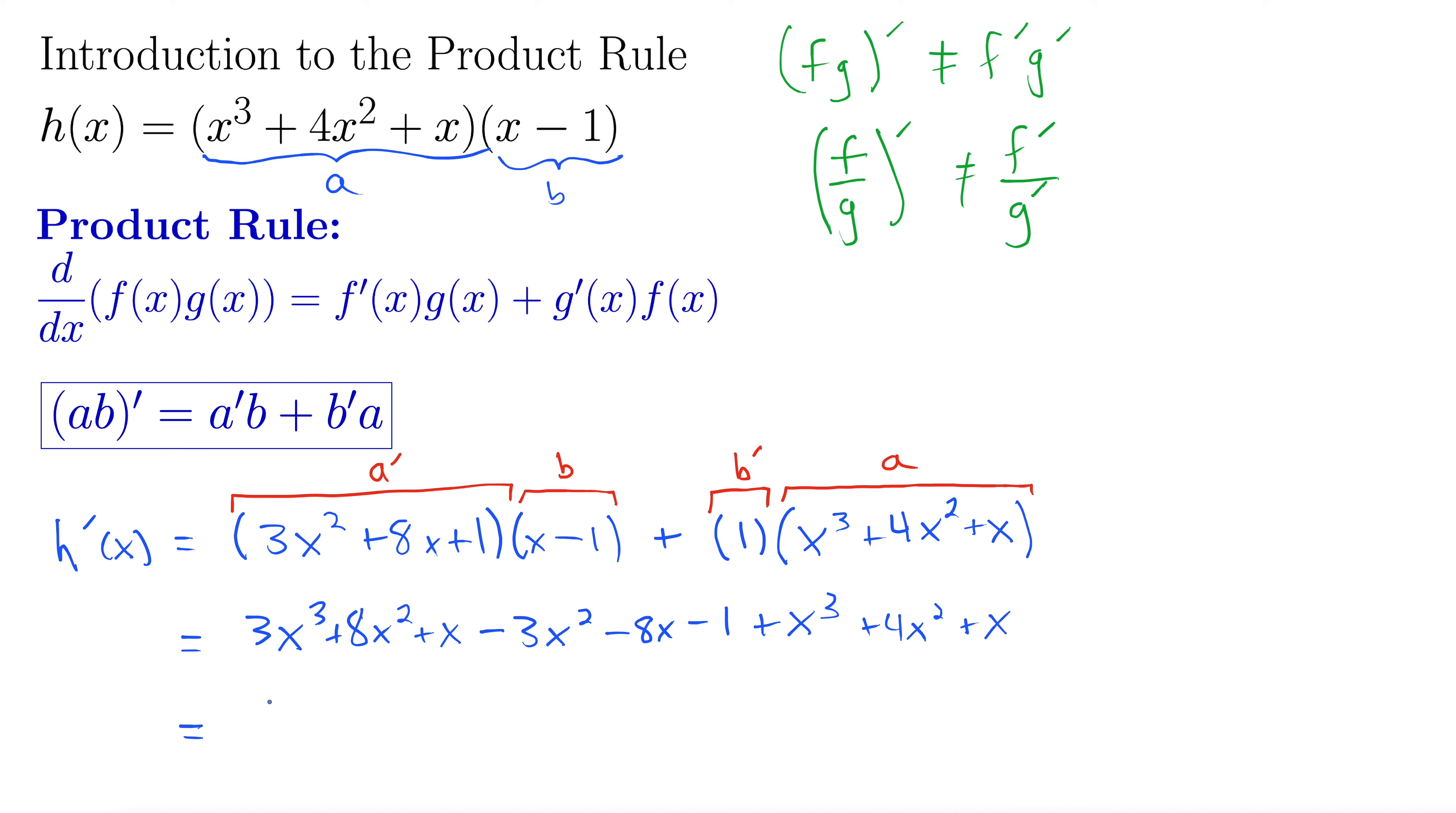Okay, combining like terms. Let's look at our x cubes first. So I'm thinking we have 4x³. Now let's look at our x squareds. How about plus 12x²? Oh, there's one more. Minus 3. So let's make that 9x².